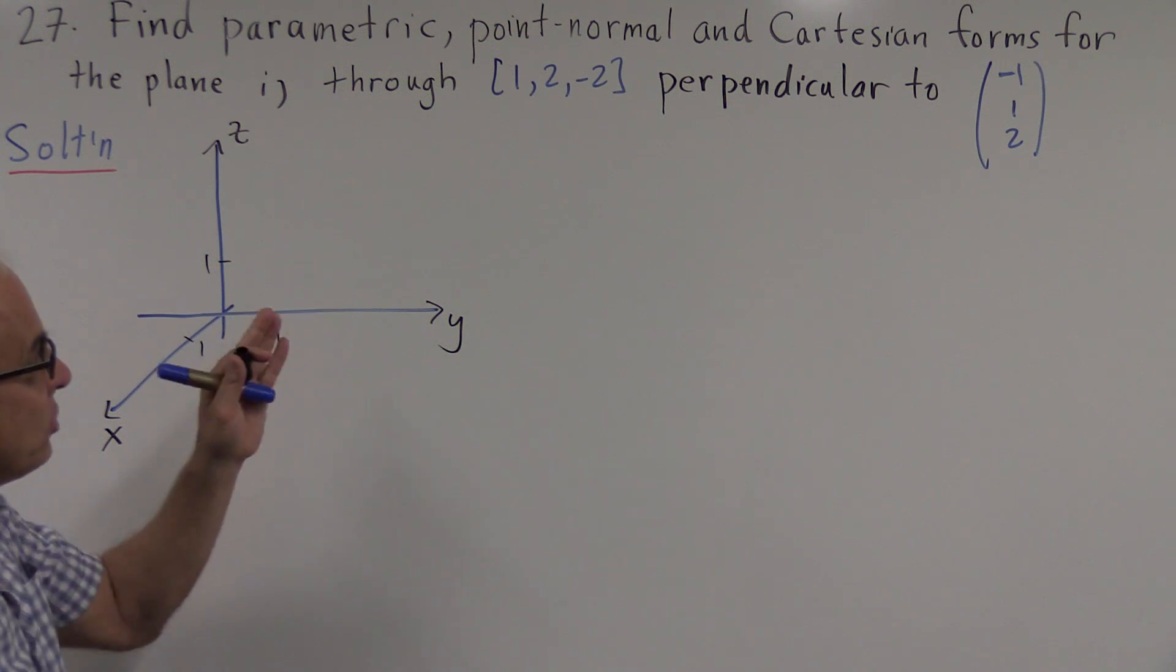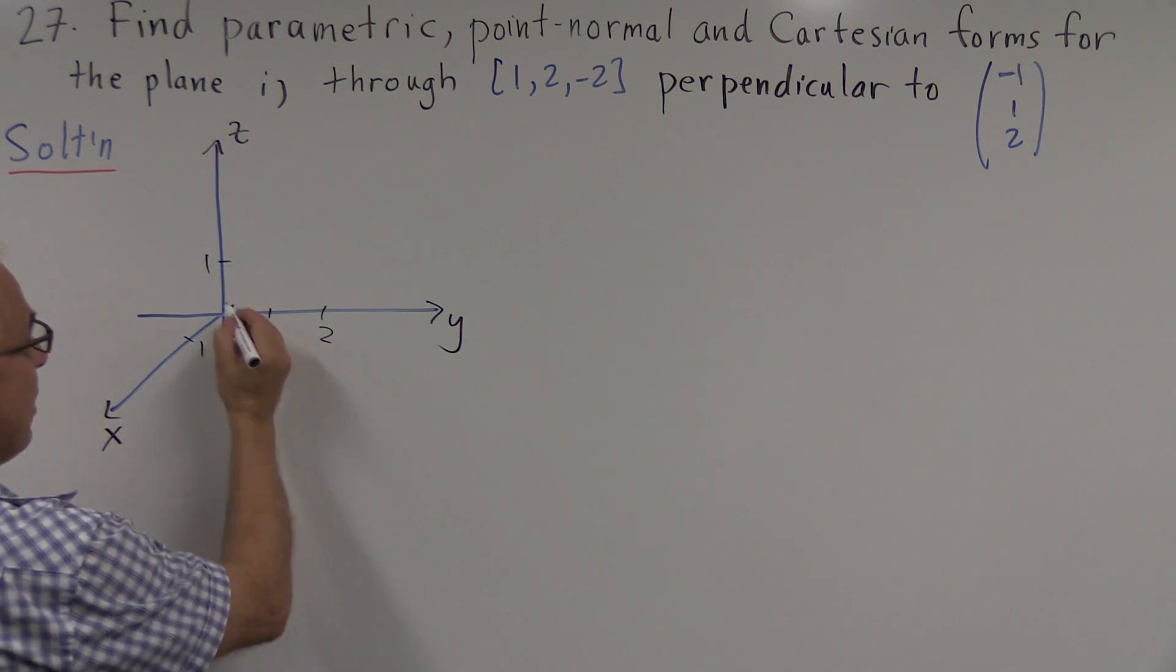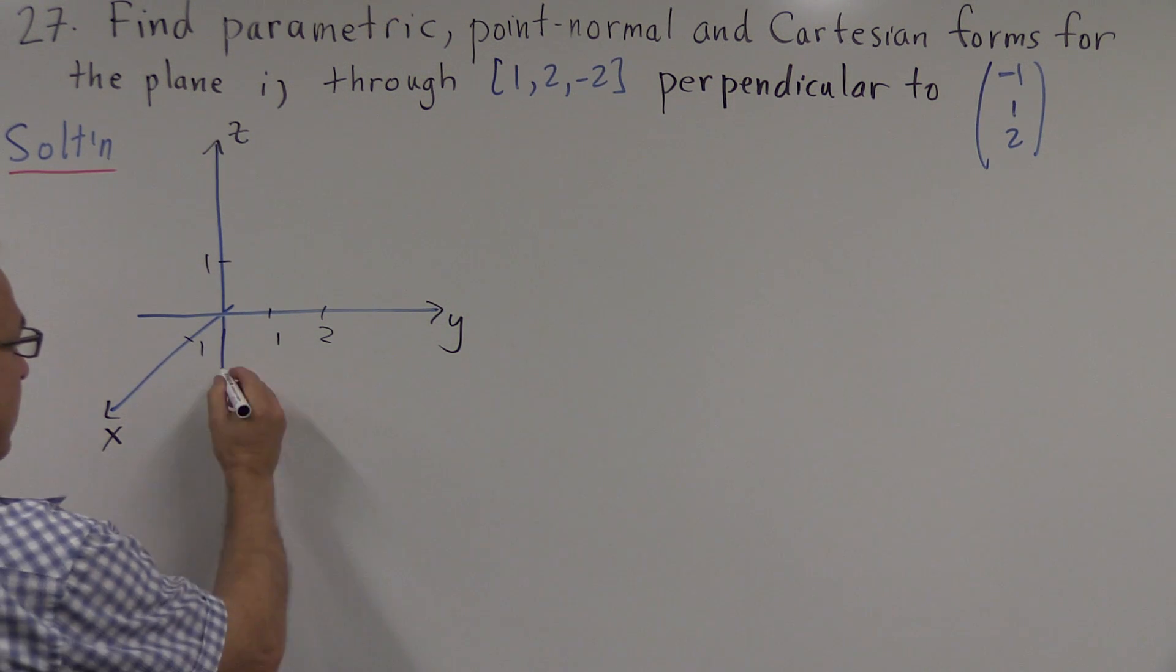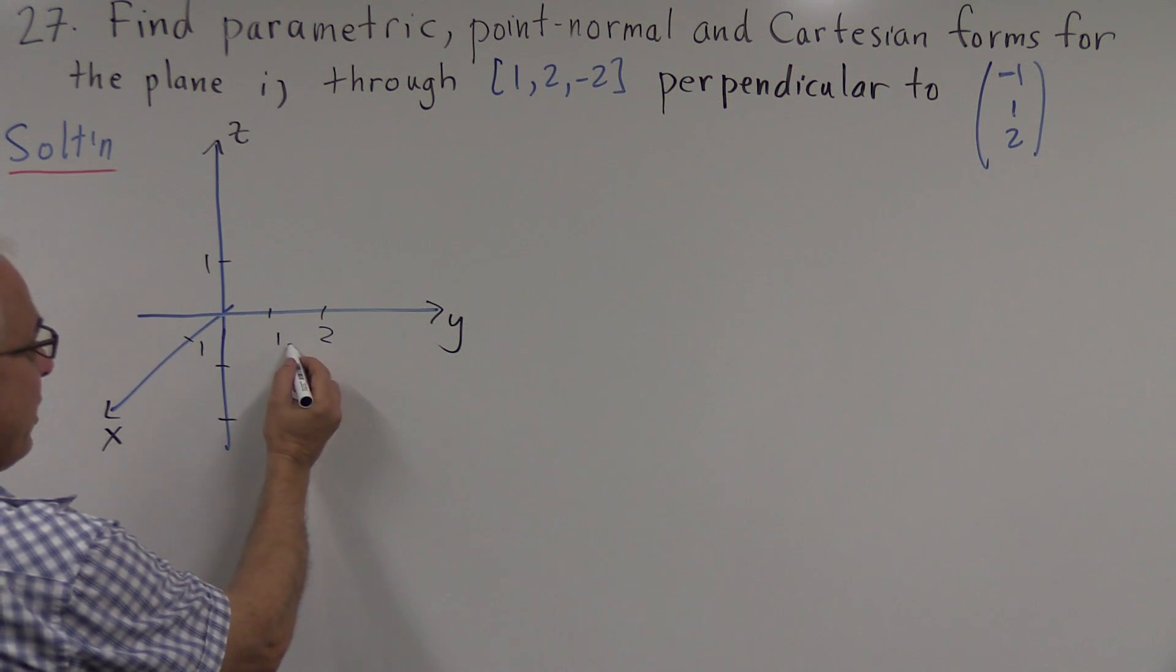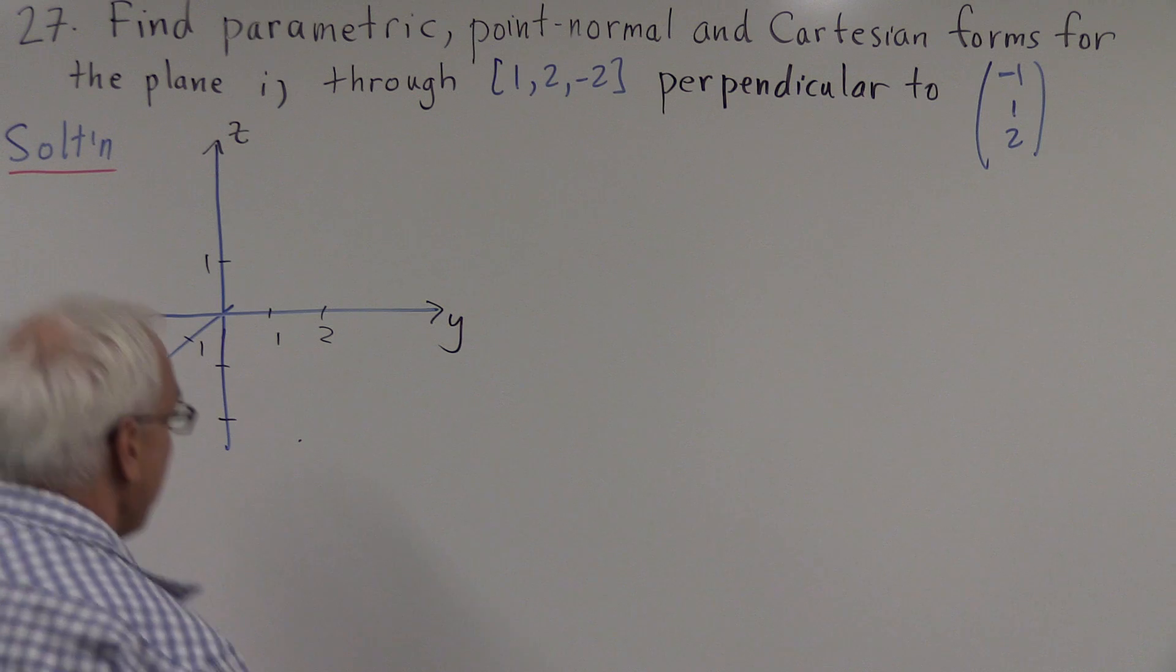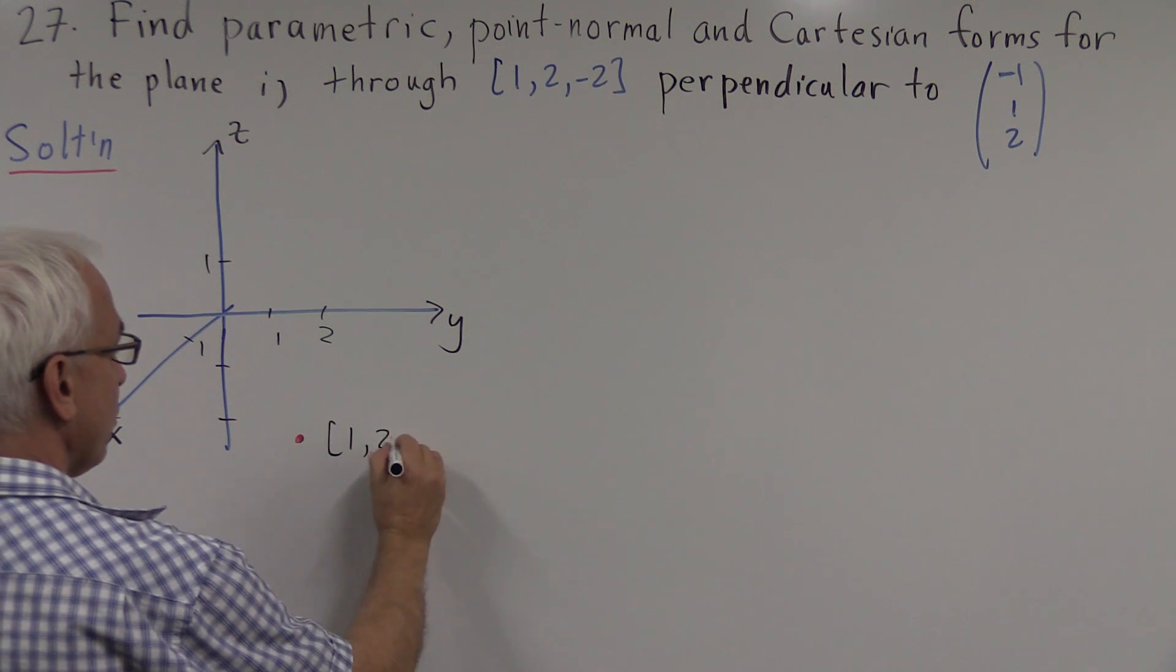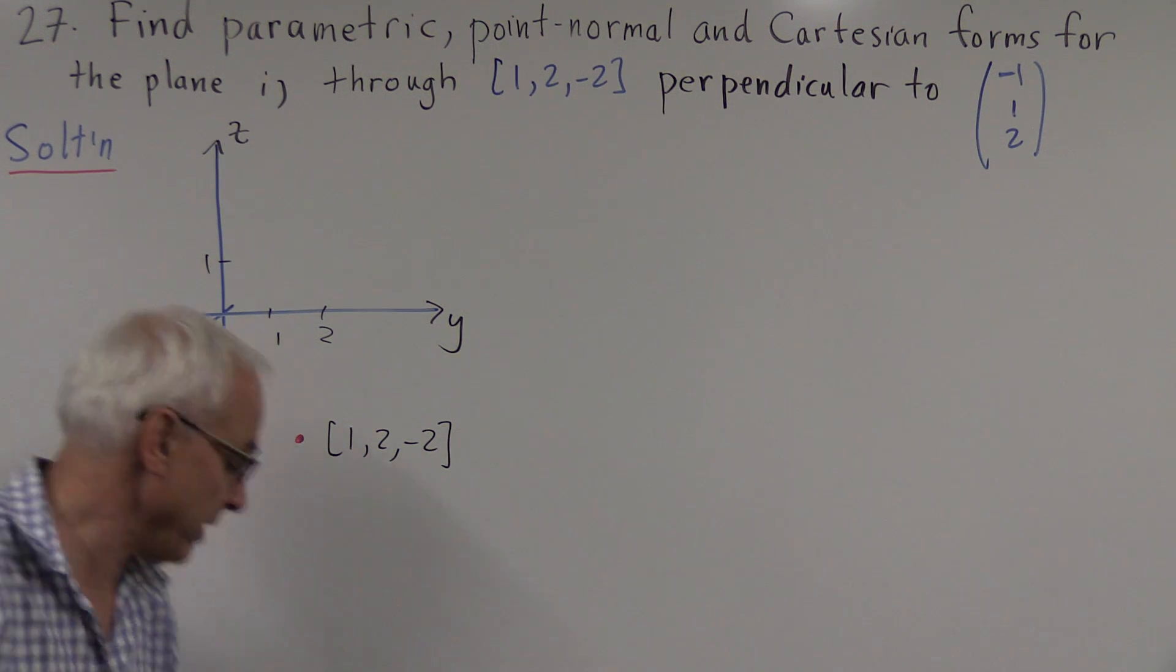So where's the point (1,2,-2)? 1 in this direction, 2 in this direction, minus 2 in the z direction. Let me extend the z-axis a little bit. So we're going to go 1 in this direction, 2 in this direction, and down 2. Maybe right about there. There's the point (1,2,-2). So that's a point in three-dimensional space.